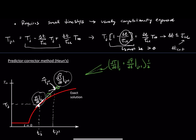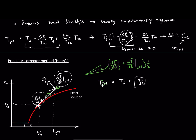So our step, as we would write it out, would look something like this: T at j+1 is equal to Tj, the current temperature, plus our estimate of the derivative — which is (dt/dt at j + dt-hat/dt at j+1) times 1/2 — times our time step delta t.